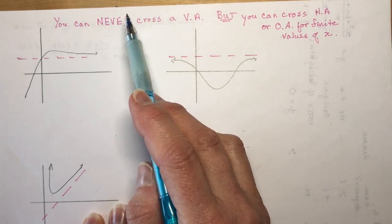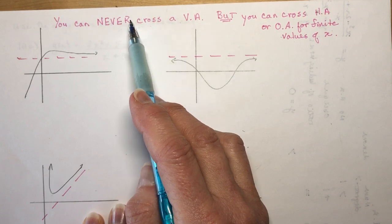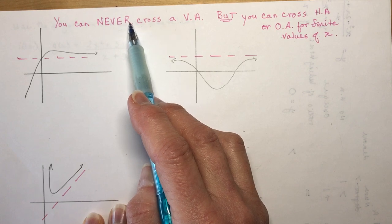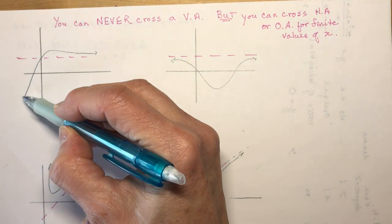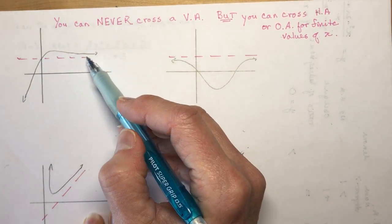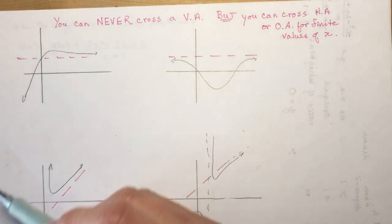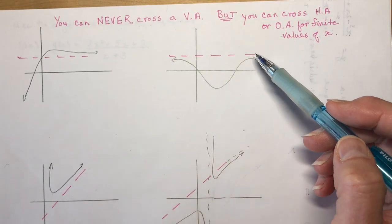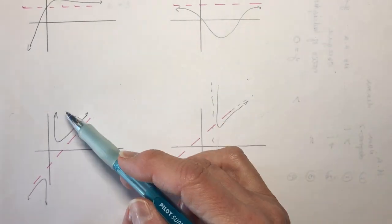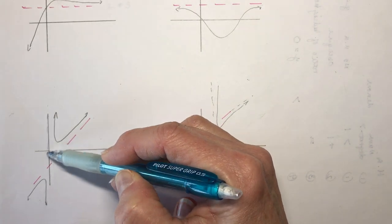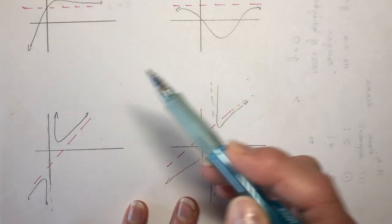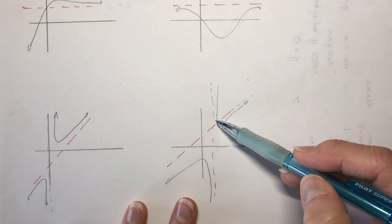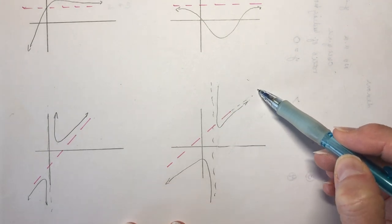Why can't you cross a vertical asymptote? Because a function is not defined there — it's not in the domain of the function where you have something that makes the denominator zero, for instance. So you could have something like this: it comes up and then comes back down and approaches a horizontal asymptote as you approach infinity. You can have an oblique that sits nicely between some vertical asymptote and your oblique, or you can have an oblique that comes down and actually crosses and then approaches it farther down.